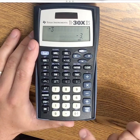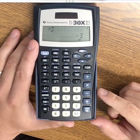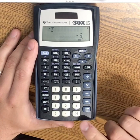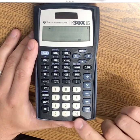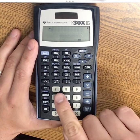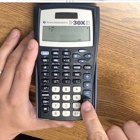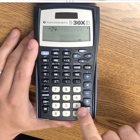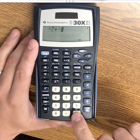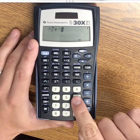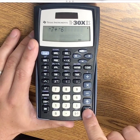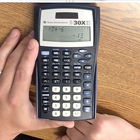for example, negative 7 plus negative 6. I would type negative 7 plus negative 6, then enter, and I get negative 13.